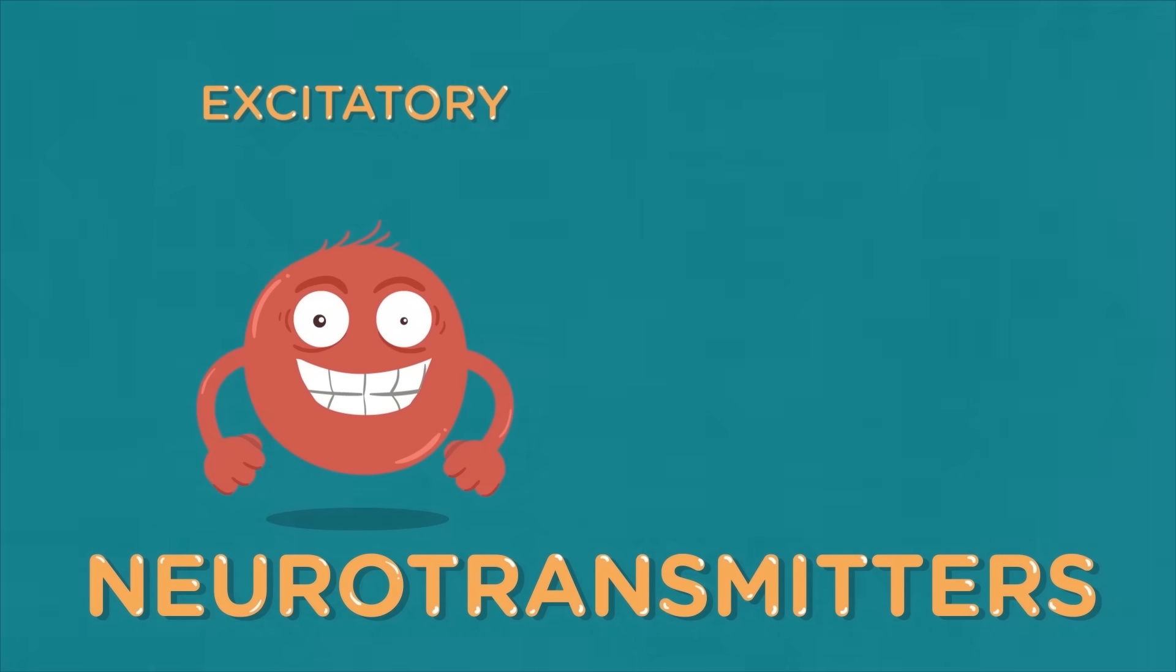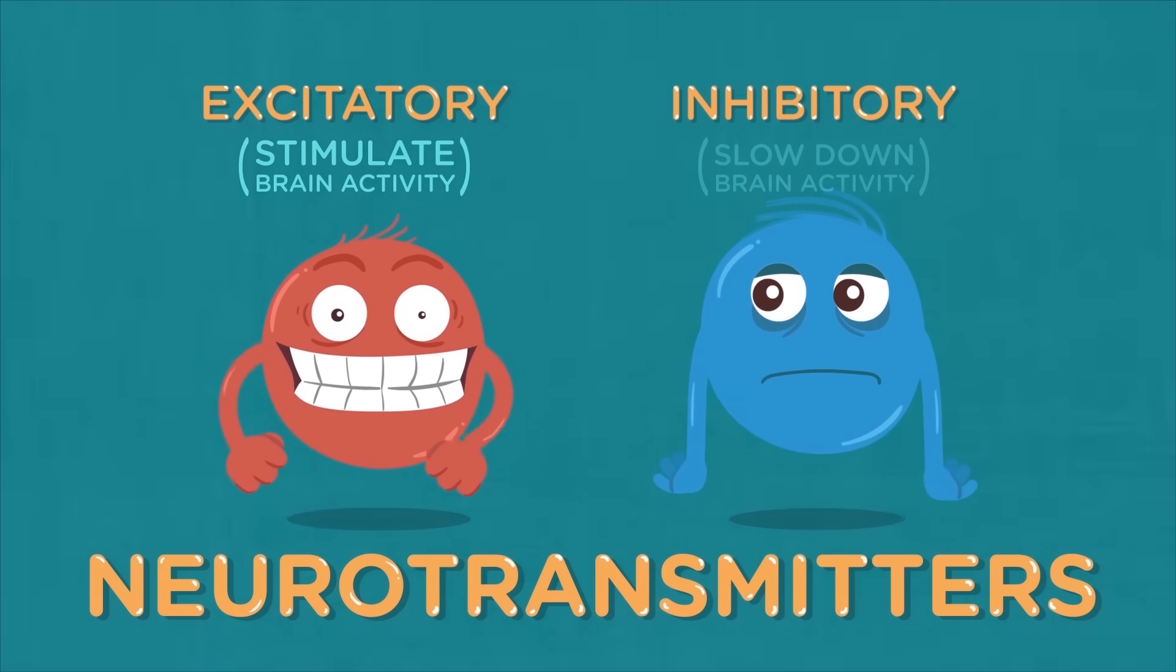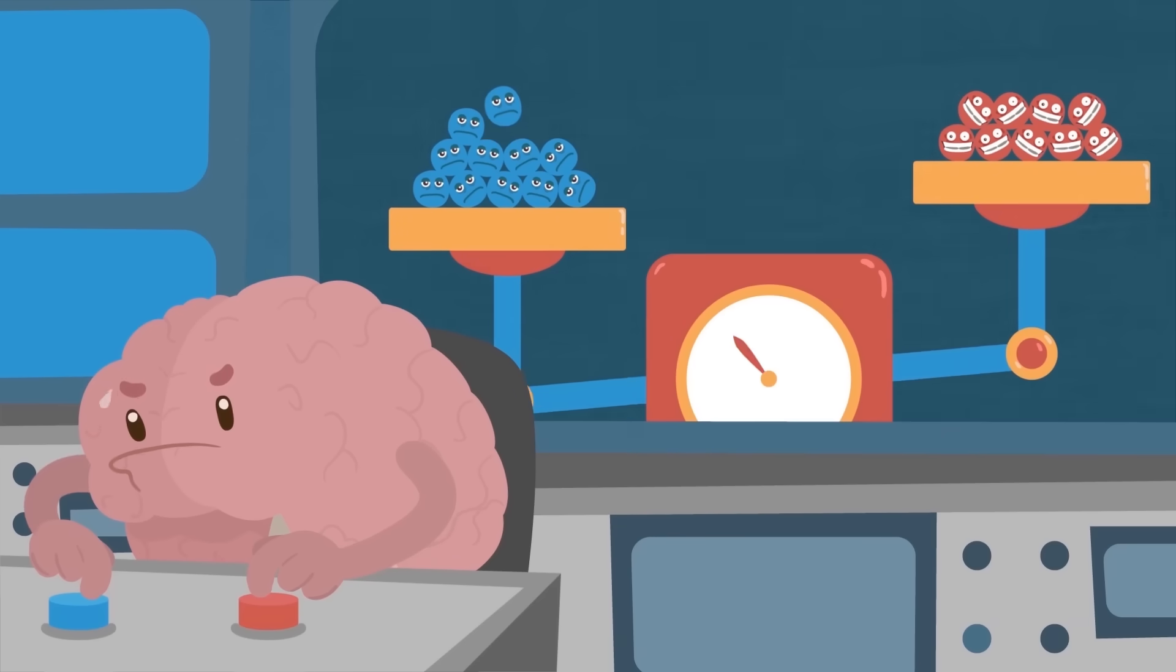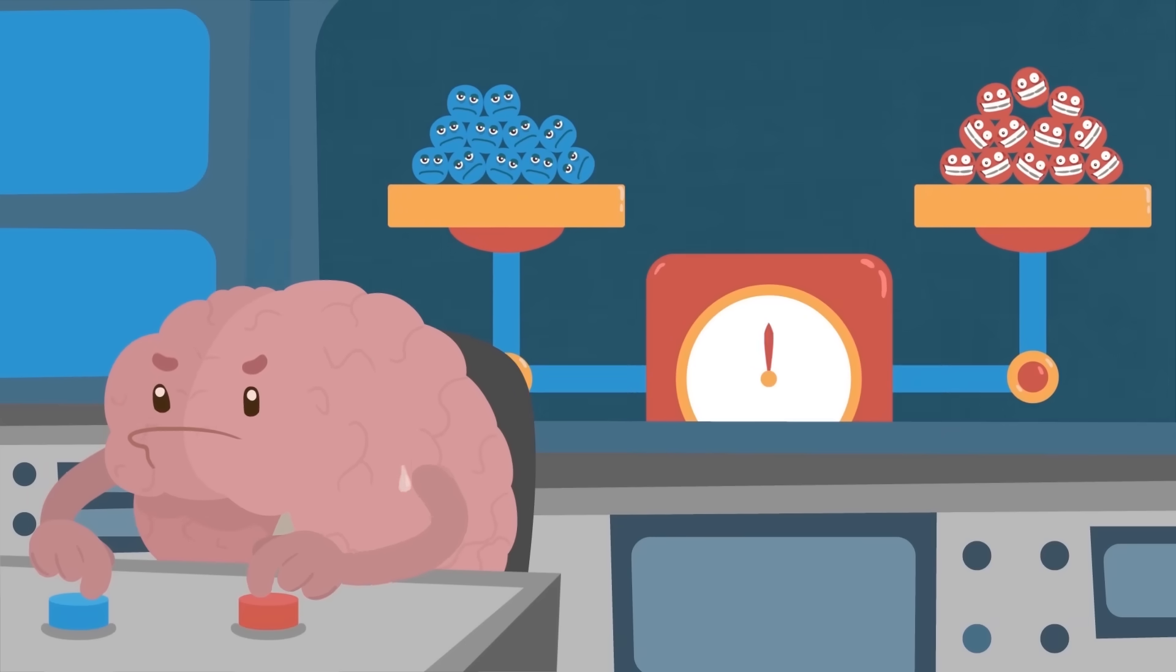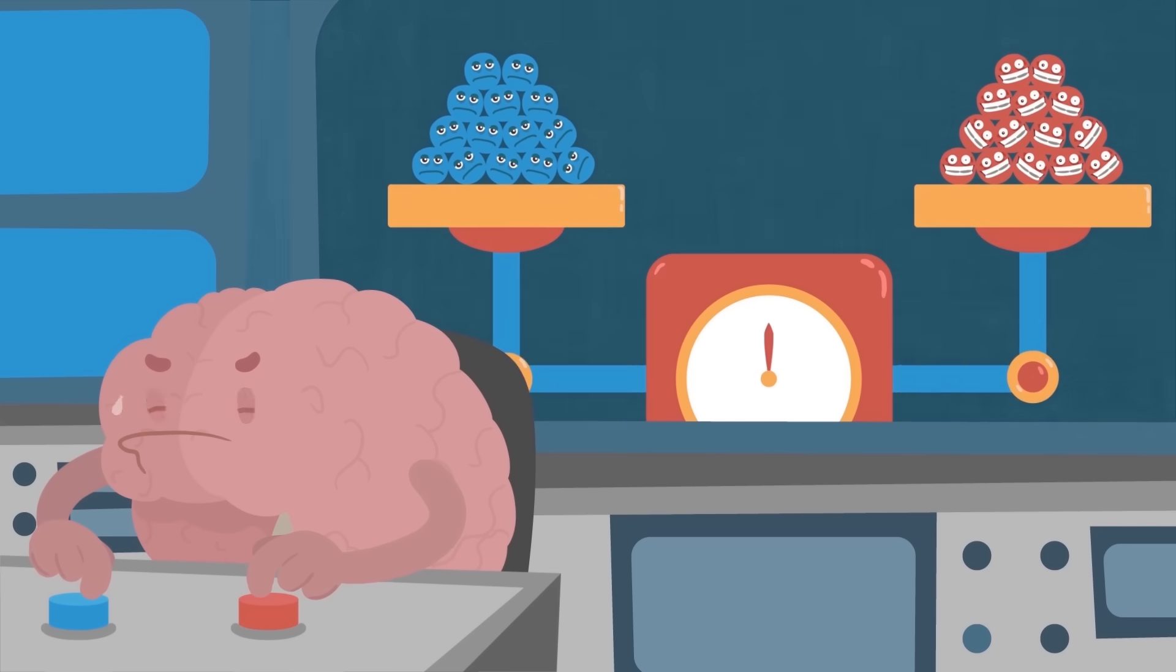Now, neurotransmitters can either be excitatory, meaning they stimulate brain activity, or inhibitory, meaning they slow down brain activity. To keep its operations going smoothly, the brain has to maintain a careful chemical balance between these two types of neurotransmitters.